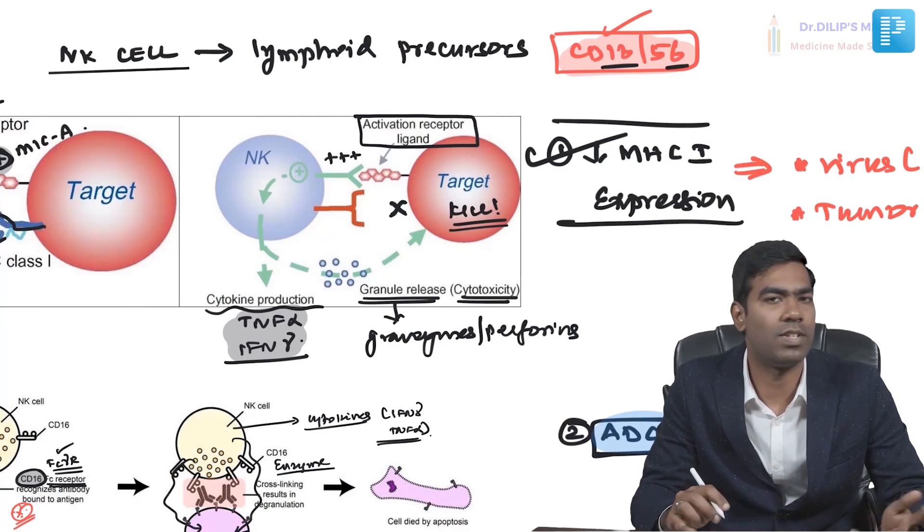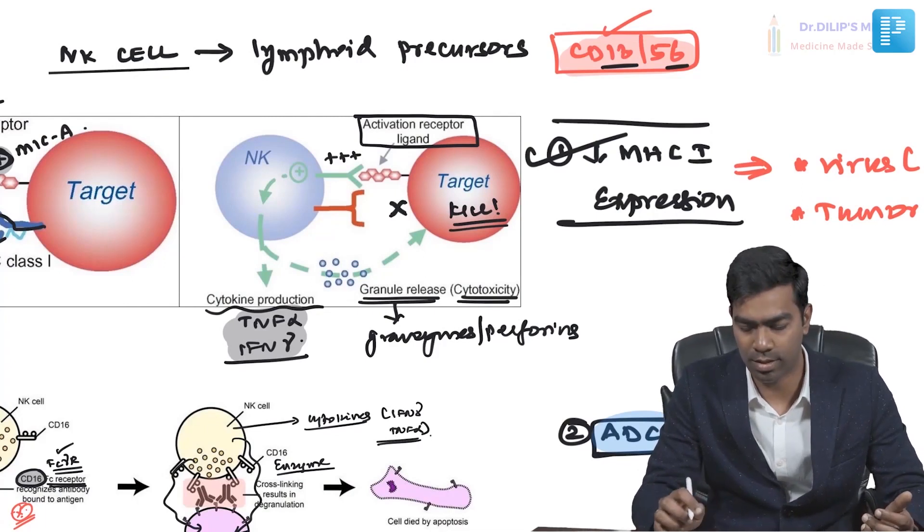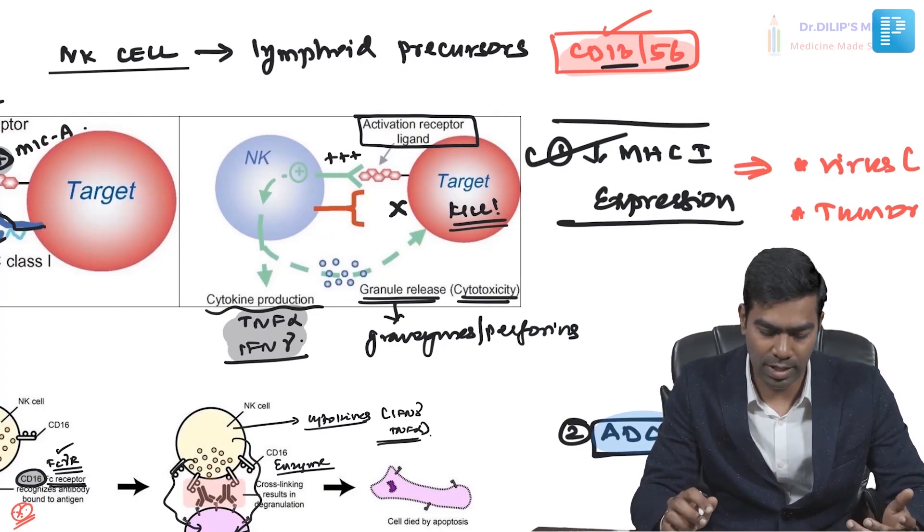The most important markers to know for NK cells in exams are CD16 and CD56. This concludes the video on how natural killer cells work, and we can now move on to the next topic.